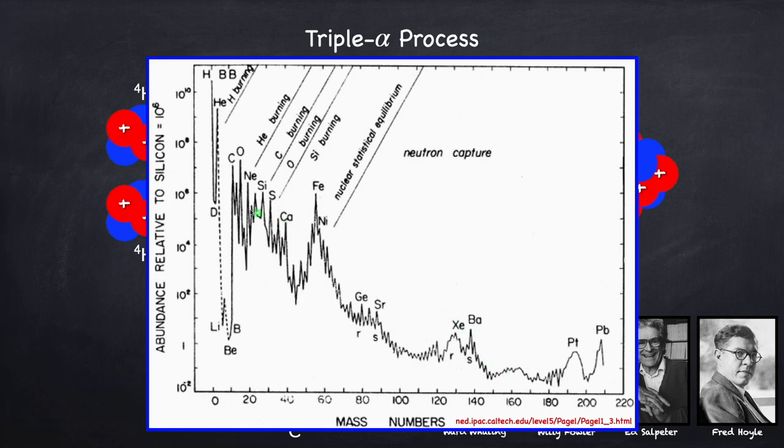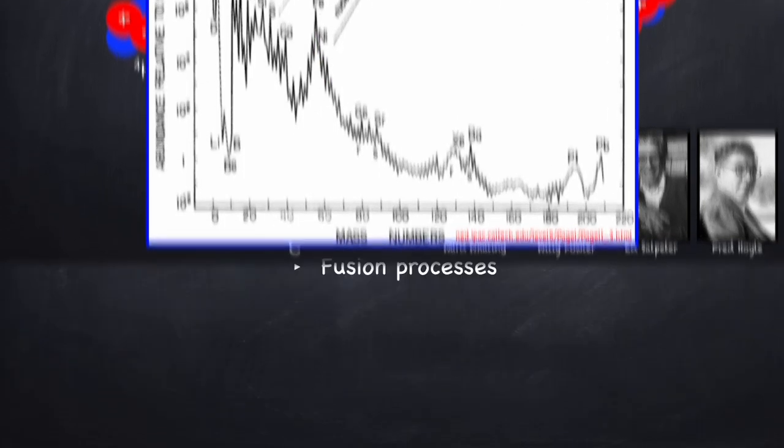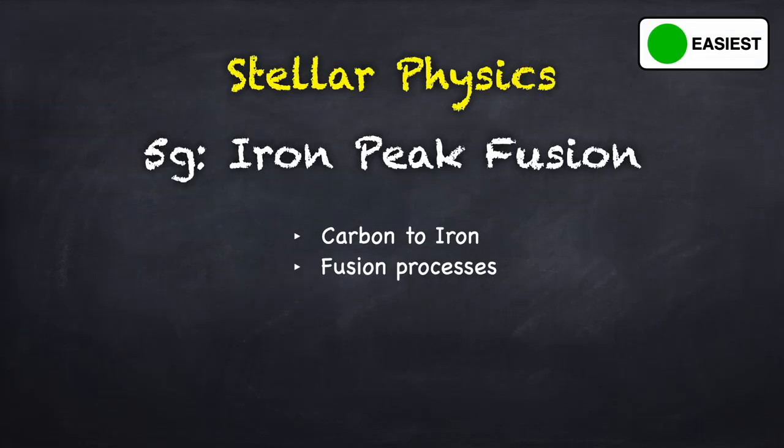And in the next couple videos, I'm going to go over how we make the rest of the elements in the periodic table. Starting with the elements up to iron. Or near iron. This is called the iron peak. So if you found this video interesting and would like to see more, be sure to like and subscribe. Hit the notification bell to be notified for future videos. And please feel free to leave a comment. Thanks for watching. See you next time.